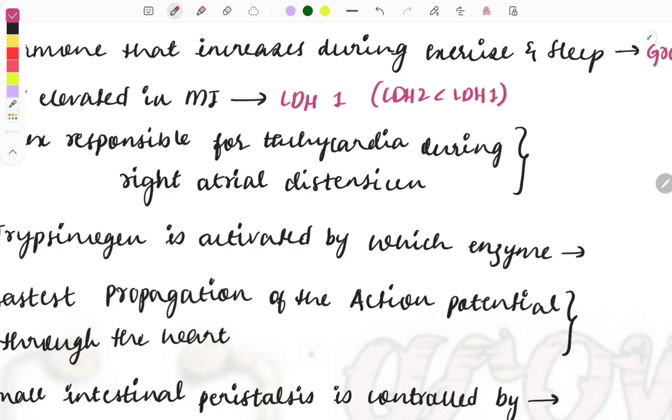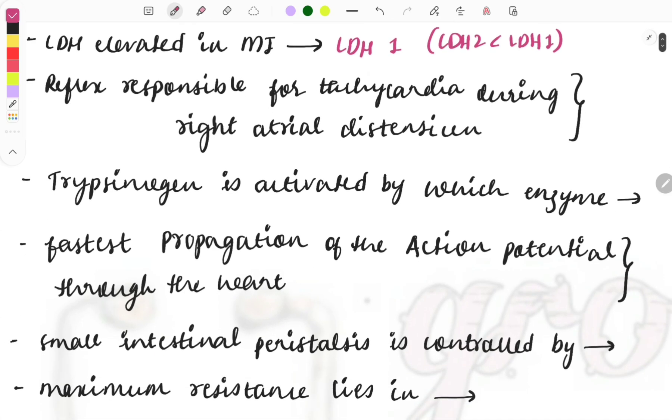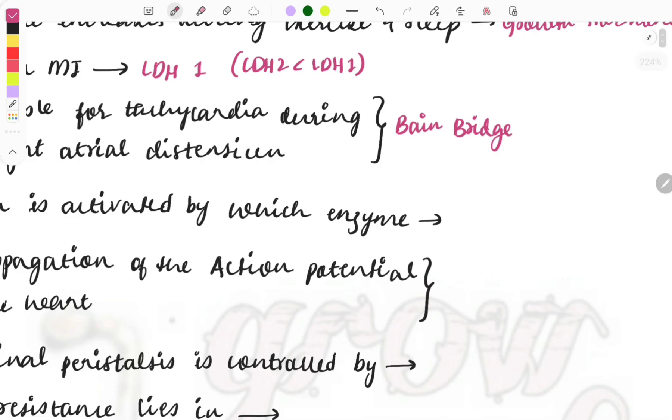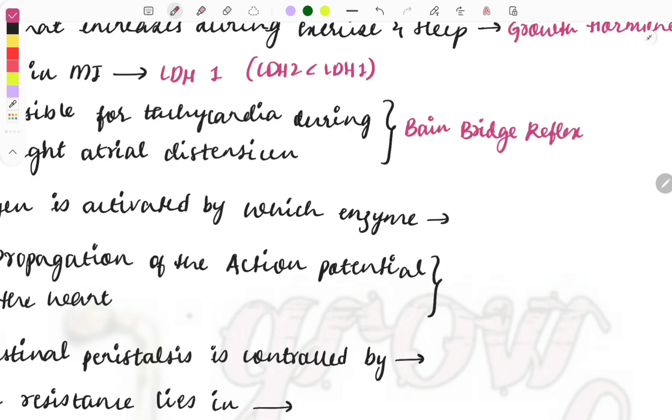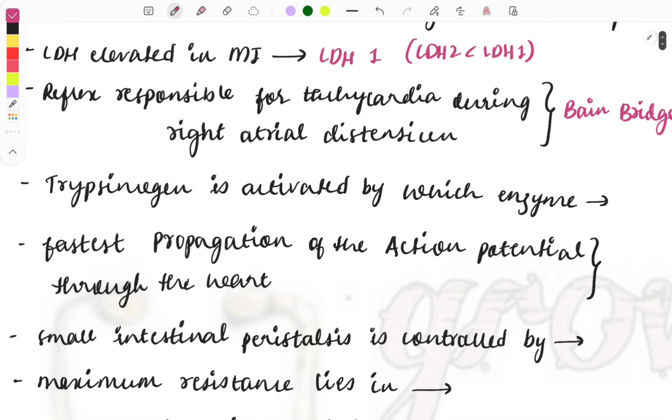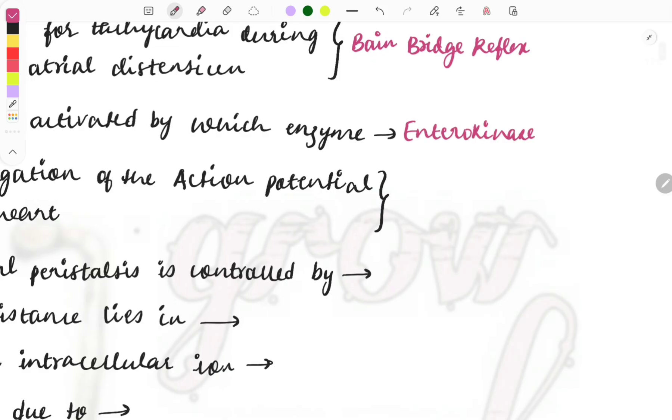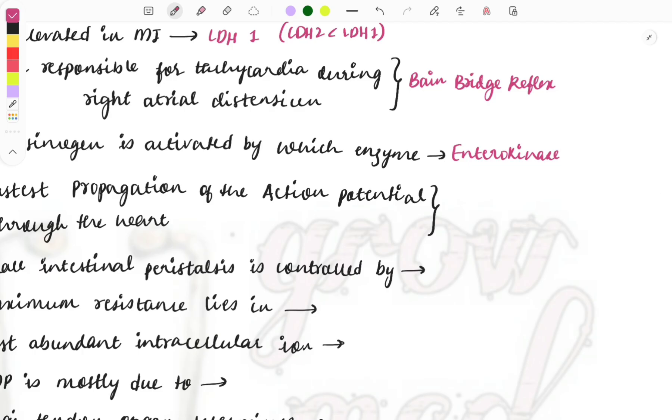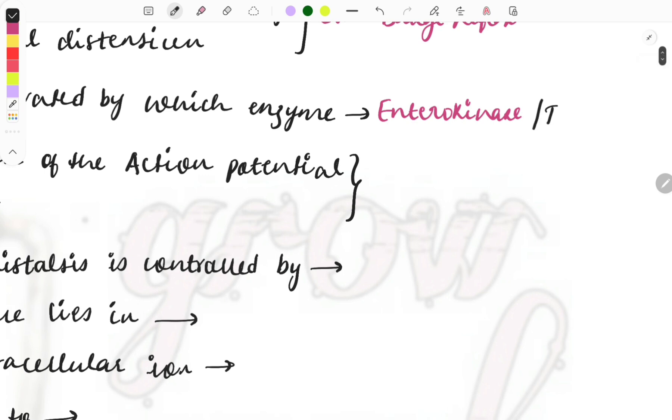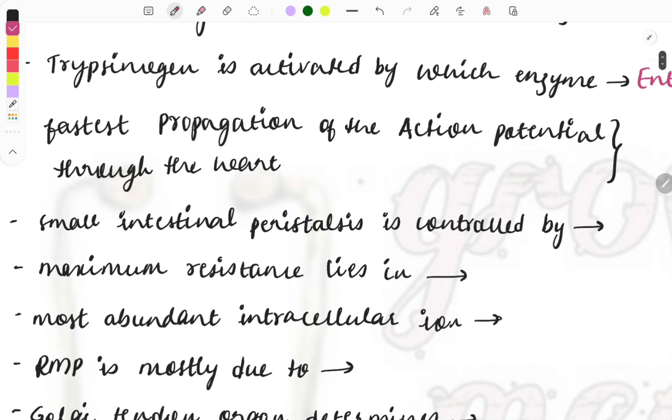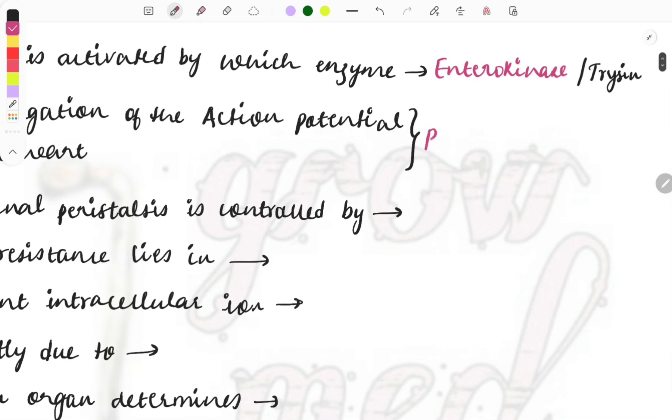LDH1, this is sometimes called as a flipped ratio because usually LDH2 will be increased, but whenever there is MI, LDH1 will increase. Then reflex responsible for the tachycardia during right atrial distension is the Bainbridge reflex. So these are some important reflexes which you must know, the definition of the reflexes. Bainbridge reflex: whenever there is atrial distension it will cause tachycardia. Then trypsinogen is activated by which enzyme? So it is the enterokinase. This enterokinase enzyme present in the intestine converts this trypsinogen to the trypsin which is the active form. Next question, fastest propagation of the action potential through the heart occurs in which cells? So it is the Purkinje fibers.